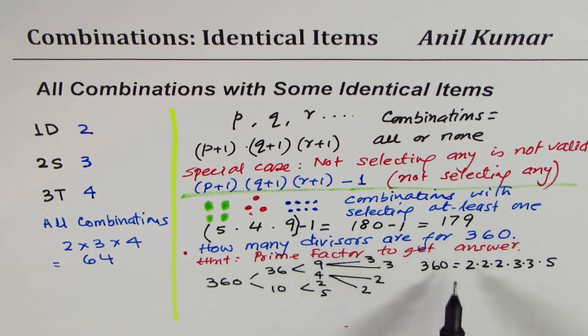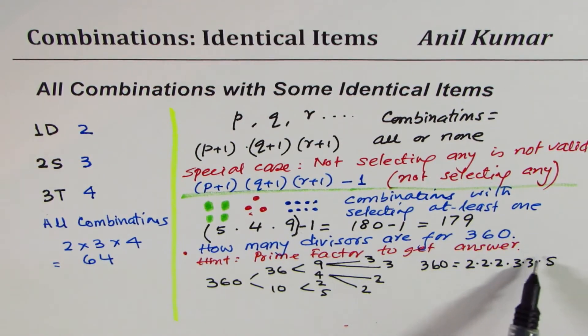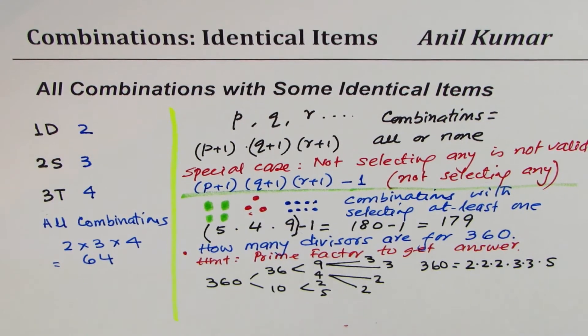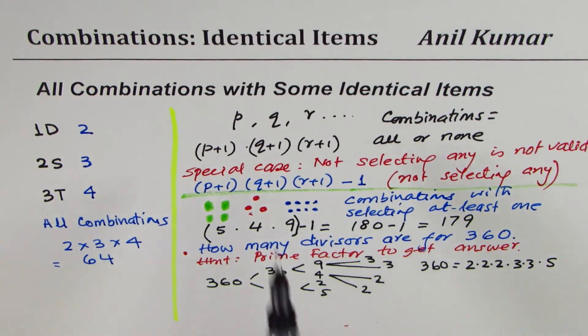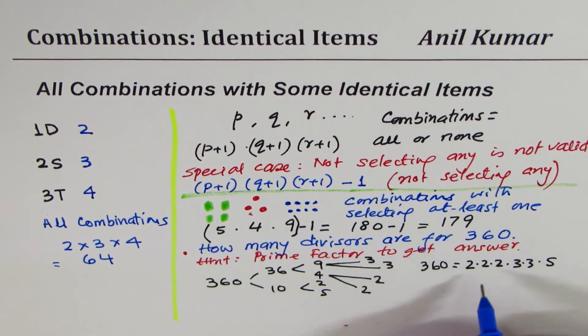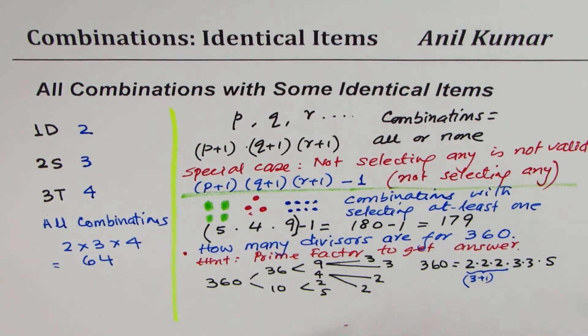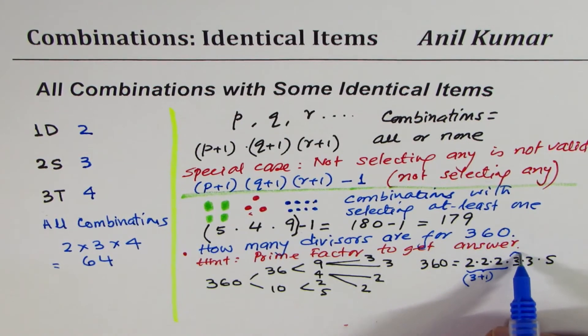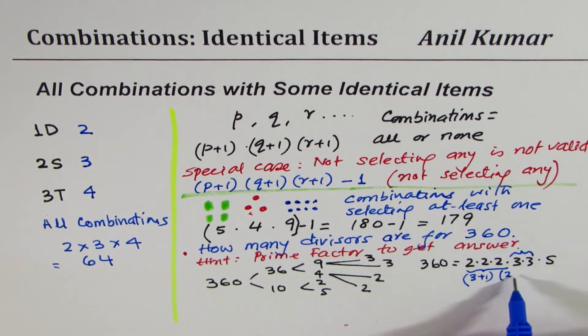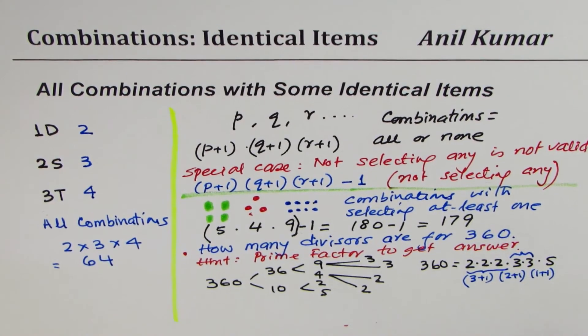It could be divided by any combination of these. Looking into our principle, we can find the answer. How many 2s are there? There are three 2s, so that gives us 4 combinations, 3 plus 1. How many 3s are there? There are two 3s, so that gives us 2 plus 1. There's only one 5, that gives us 1 plus 1 combination.